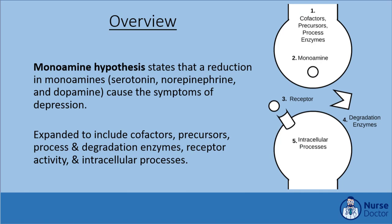The monoamine hypothesis of depression states that a reduction in monoamines, namely serotonin, norepinephrine, and dopamine, cause the symptoms of depression. Since its conceptualization, the monoamine hypothesis has expanded to include the influence of cofactors, precursors, process enzymes, receptor activity, degradation enzymes, and intracellular processes in addition to the monoamines themselves. This hypothesis is particularly important in the history of depression management as most currently available antidepressant drugs function to increase monoamines.